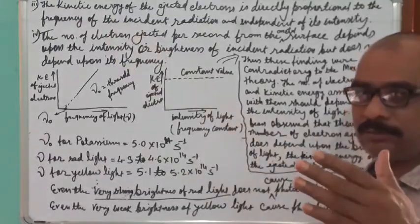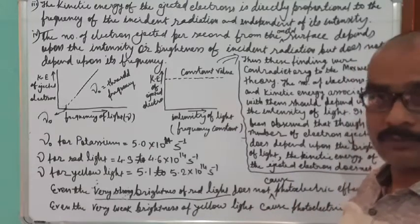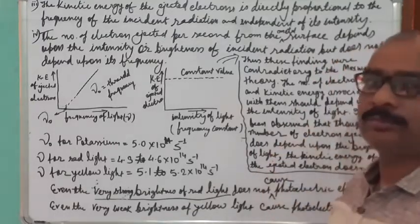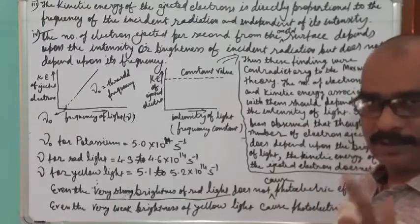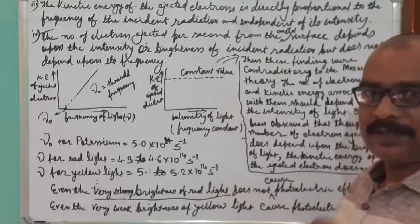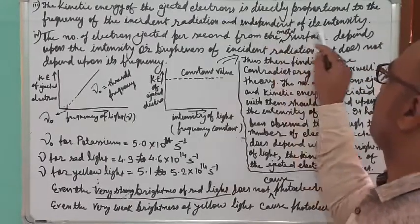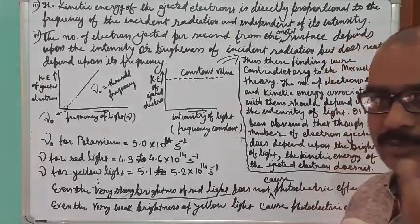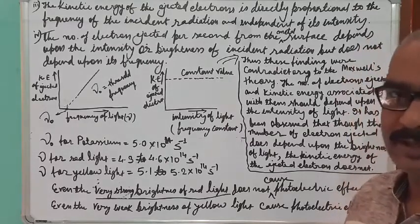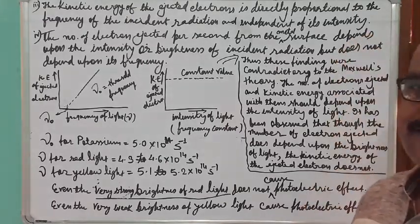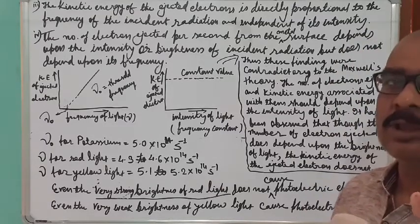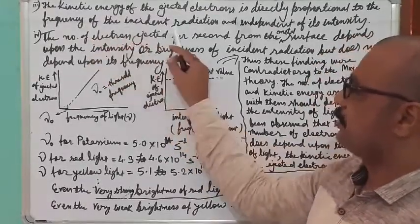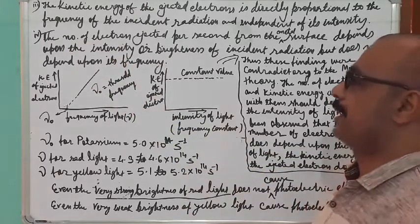The electron is moving from the negative terminal to the positive terminal inside the glass tube, and for this movement it needs kinetic energy. This kinetic energy doesn't depend on the intensity of light — that means the brightness, whether weak, strong, or moderate, doesn't make any change in the kinetic energy. But the frequency of the incident radiation does contribute towards the kinetic energy.